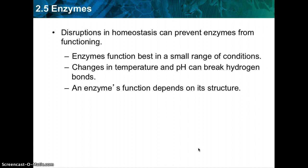Most enzymes are affected by changes in temperature. Not surprisingly, enzymes produced by human cells generally work best at temperatures close to 37 degrees Celsius, or 98.6 degrees Fahrenheit, which is around the normal temperature of the human body. Enzymes also work best at certain ionic conditions and pH values. For example, the stomach enzyme pepsin, which begins protein digestion, works best under acidic conditions.